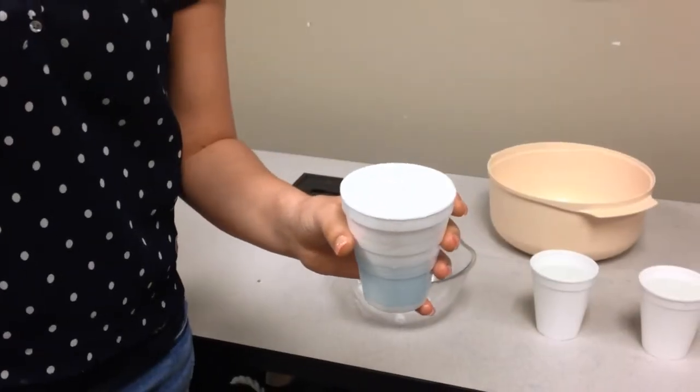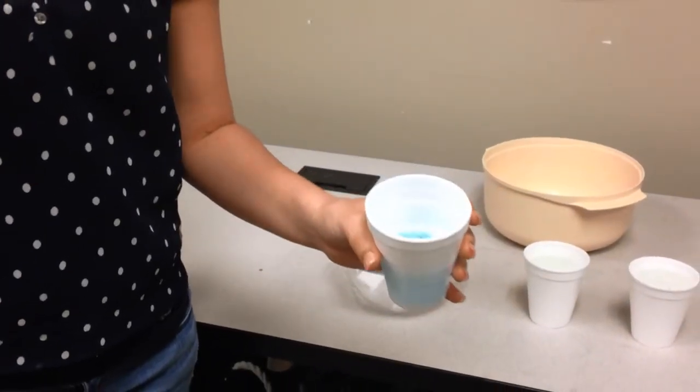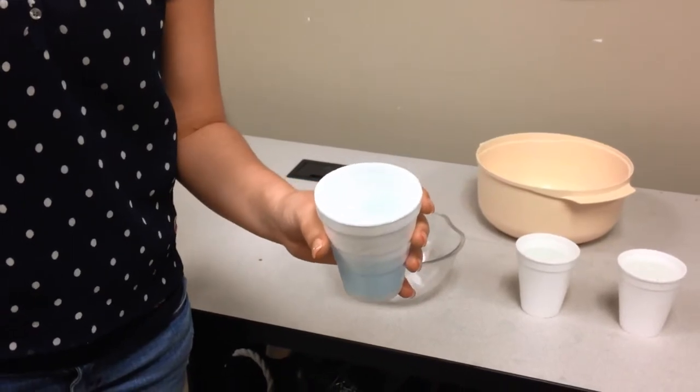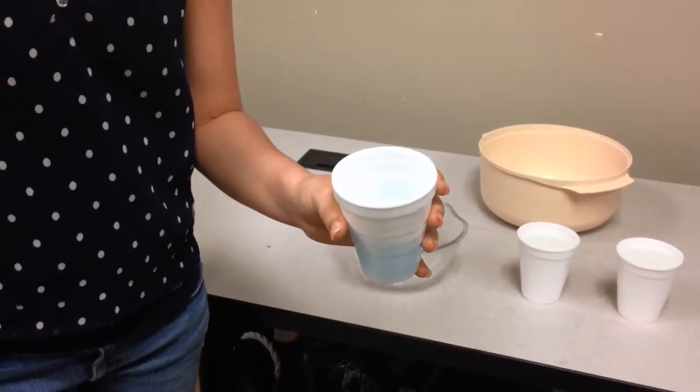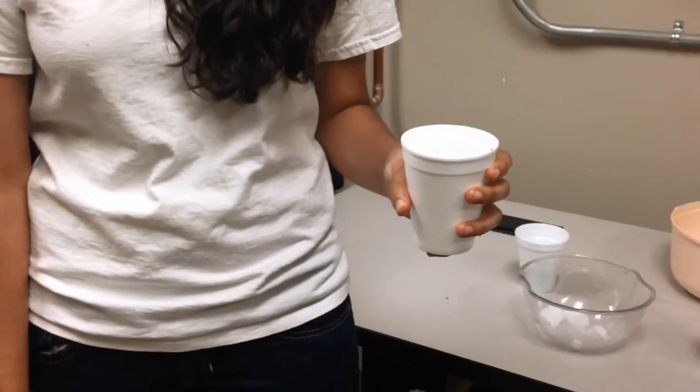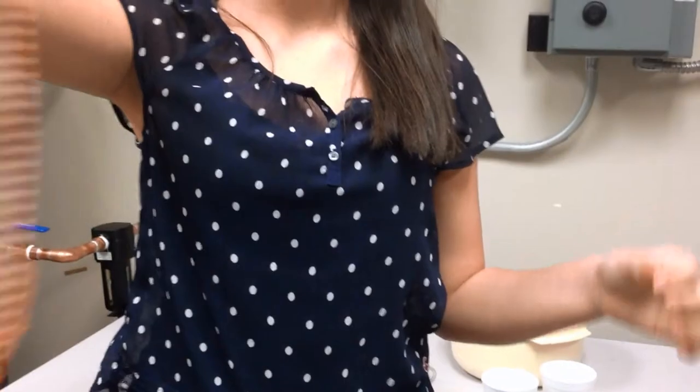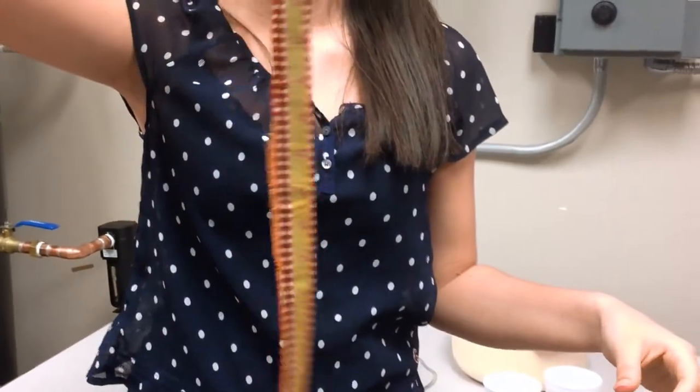This is a giant glycerin globe. In this cup we have 5 tablespoons of dish detergent and 4 tablespoons of 95% glycerin. In this cup we have 1 cup of distilled water. 100% cotton cloth strip.